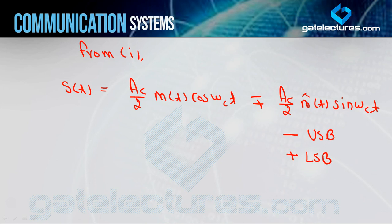Confuse mat hoiye — jab humne cos(2π(fc+fm)t) ya cos(2π(fc−fm)t) likha tha tab plus upper tha aur minus lower tha. Lekin jab humne cos(a+b) ya cos(a−b) ka formula apply kiya, toh signs reverse ho gaye. Isliye final equation mein minus means upper sideband and plus means lower sideband.